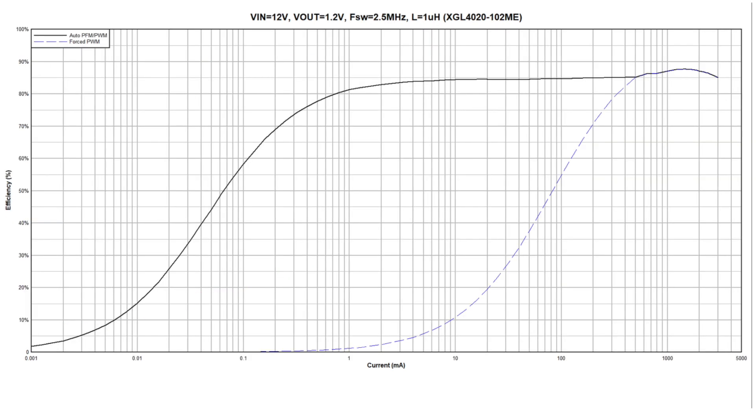This figure compares the efficiency between the two modes. At around 400 milliamps in the Force PWM mode, the efficiency dropped drastically and reaches 10 percent around 10 milliamps. In Auto mode, the efficiency is well maintained above 80 percent. The TPS62903 is also flexible enough to be optimized for space constrained applications.